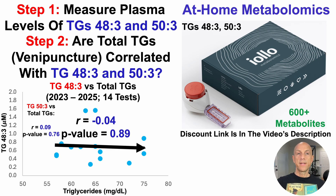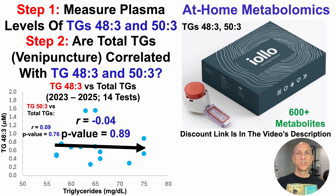With similar data obtained for TG53, the p-value is 0.76, also far from the 0.05 significance threshold. So unfortunately, if the goal is to optimize and reduce plasma levels of these two triglycerides, just keeping total triglycerides low, at least in my case, may not be significantly correlated with lower levels of either TG48-3 or TG53.